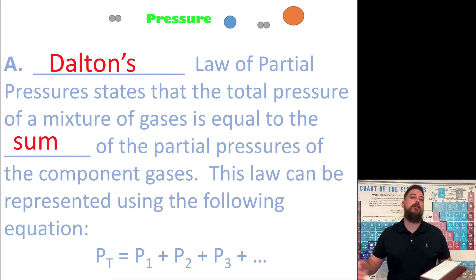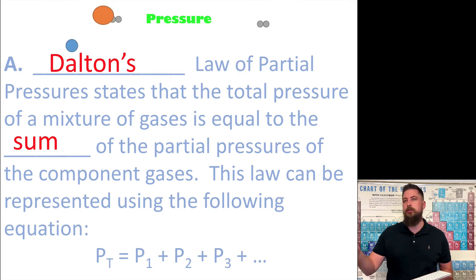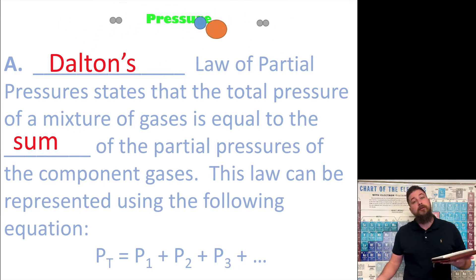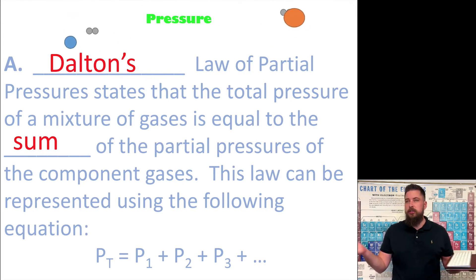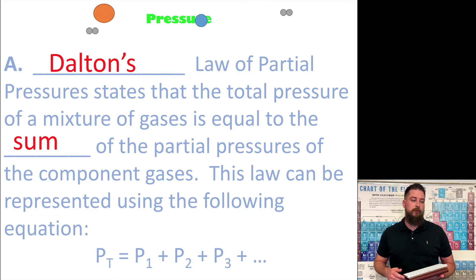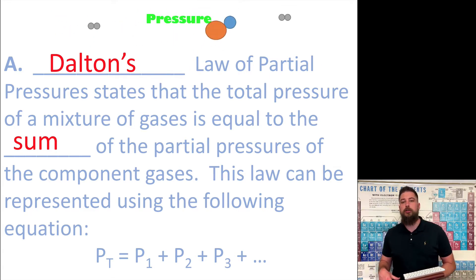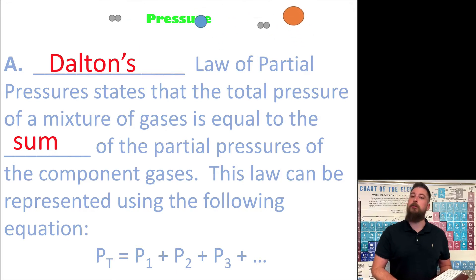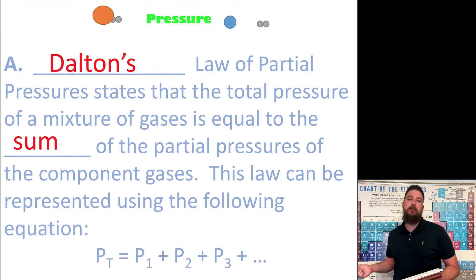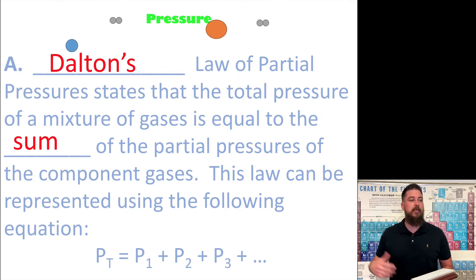There's a certain air pressure around us, but the air around us is not a pure substance — it's a mixture. It's got oxygen, nitrogen, and carbon dioxide. The total pressure that we experience is a sum of all of the individual pressures of those gases. You can use Dalton's Law of Partial Pressure to calculate a total pressure, or you can use it to work backwards to calculate the pressure of an individual gas if you know the other pressures and the total pressure.